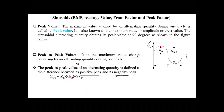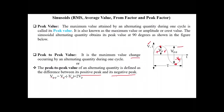For this waveform, the positive peak is represented by +Vp while the negative peak is represented by -Vp. The peak to peak value Vpp is between the positive peak and negative peak. As per the definition, Vpp equals the positive peak minus the negative peak.